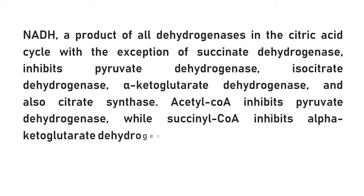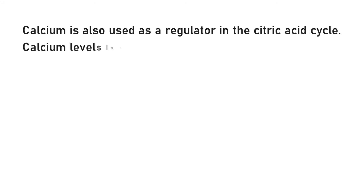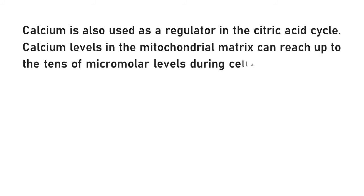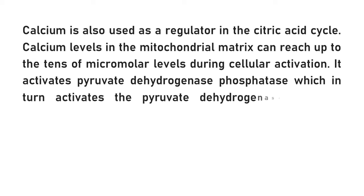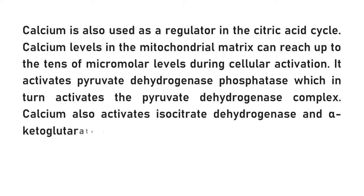Calcium is also used as a regulator in the citric acid cycle. Calcium levels in the mitochondrial matrix can reach up to tens of micromolar levels during cellular activation. It activates pyruvate dehydrogenase phosphatase, which in turn activates the pyruvate dehydrogenase complex. Calcium also activates isocitrate dehydrogenase and alpha-ketoglutarate dehydrogenase, increasing the reaction rate of many steps in the cycle and therefore increasing flux throughout the pathway.